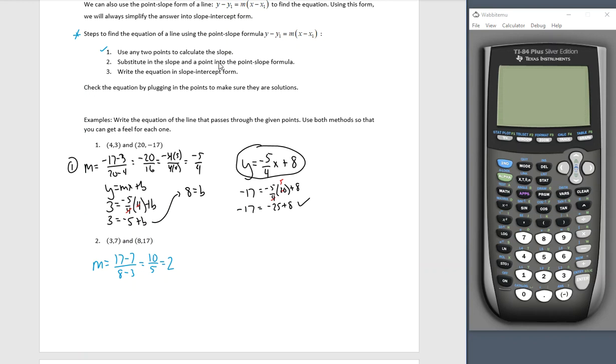Substitute in the slope and a point here. So I will use 3, 7. So let me write my equation here. y minus y1 equals m times x minus x1. We know that y is y. The first y here is 7, the first point. m value of 2. x minus my x value is 3. So in my next step, the only thing I'm going to do is distribute this 2 through the parentheses. So we'll have y minus 7 equals 2x minus 6.